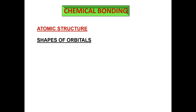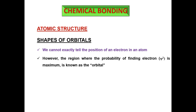How do these orbitals look? From Heisenberg's uncertainty principle, we know we cannot exactly determine the position of an electron in an atom. What we can determine is the probability of finding an electron, denoted by ψ² (psi squared). The square of the wave function gives the probability of finding an electron around a particular nucleus, and the region where this probability is maximum is known as the orbital.